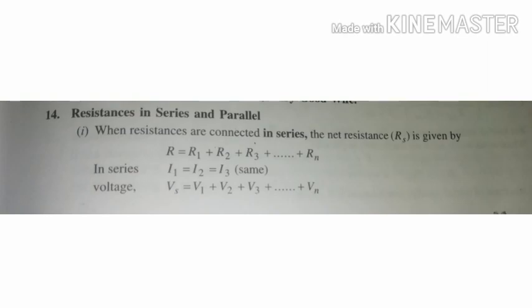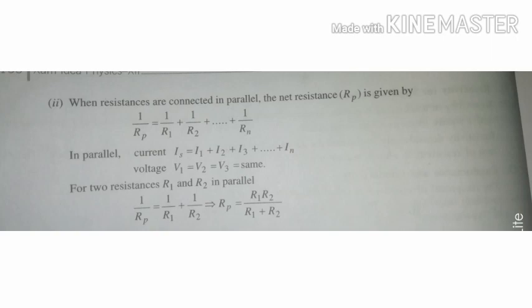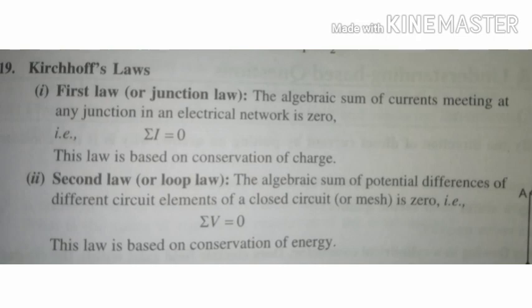Combination of resistances: in series, R equal to R1 plus R2 plus R3; the current is the same in series. In parallel, the voltage is the same and the effective resistance is 1 by R equal to 1 by R1 plus 1 by R2. Kirchhoff's laws: the first law is the junction rule and the second law is the loop rule. The loop rule states that the algebraic sum of the potential differences in a closed circuit is zero.